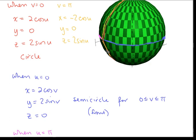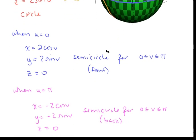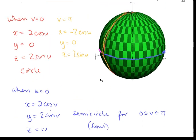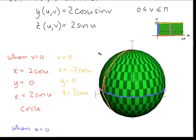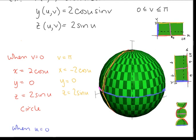Similarly, when u equals π, we get negative 2 cosine v, negative 2 sine v, 0 — and for v going from 0 to π, that gives us the back semicircle. Now let's see how this rectangular region maps onto this sphere. The blue line around the front is the front semicircle, and the pink line around the back is the back semicircle. So it looks like we're wrapping from the front around to the back.